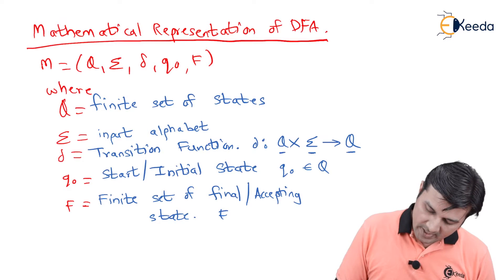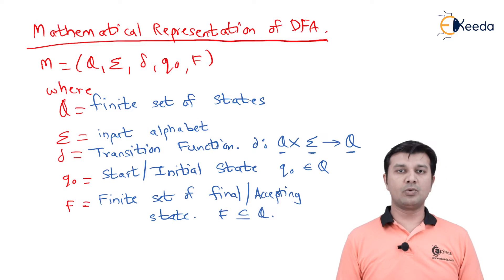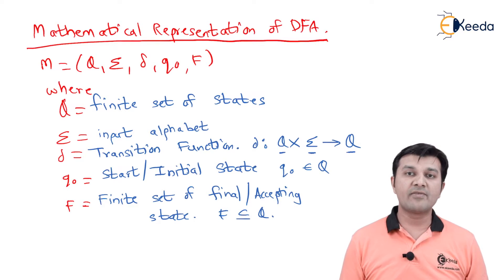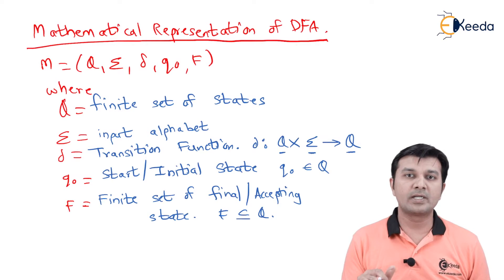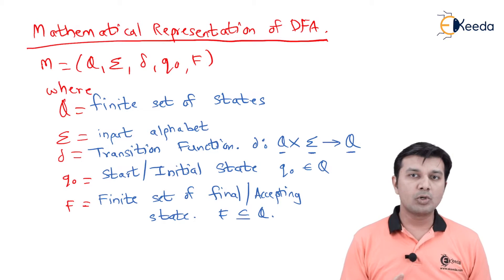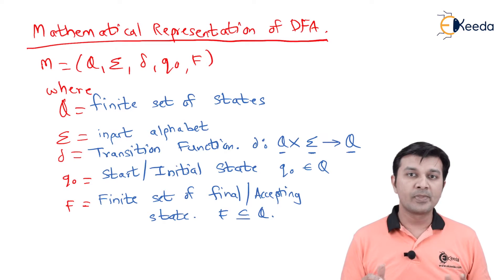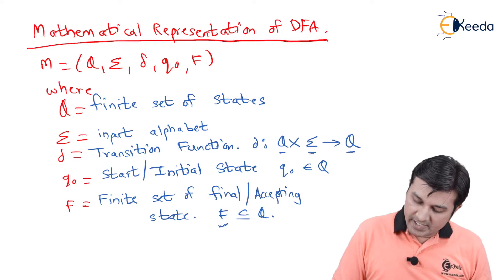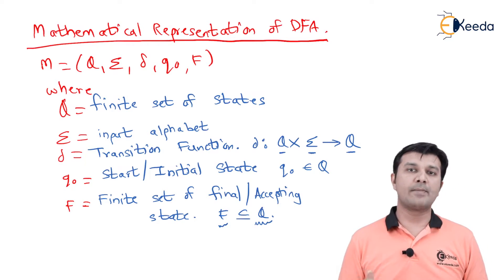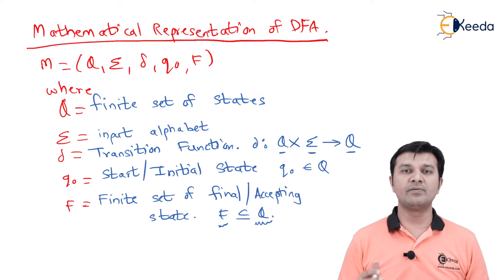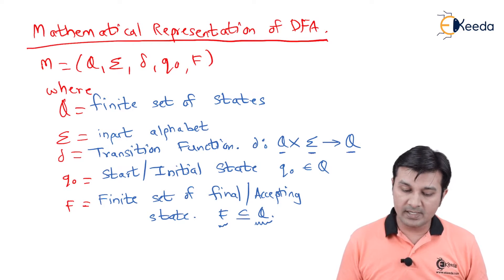F is going to be a subset of Q. You cannot say F belongs to Q — although that is right — because it can be a single state or more than one state. Therefore F is a set which is a subset of capital Q, the finite set of states. That completes the mathematical representation of DFA.